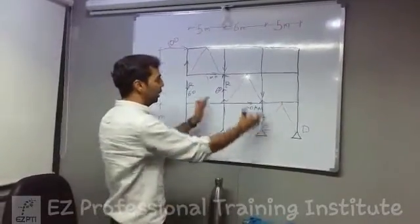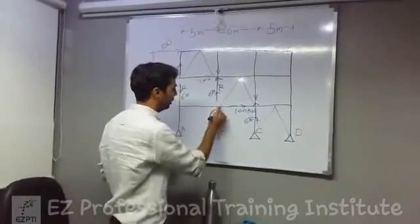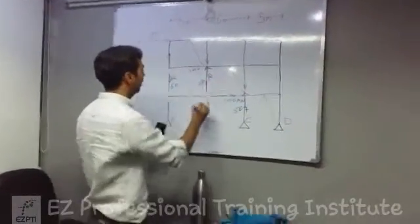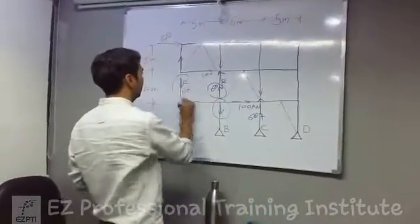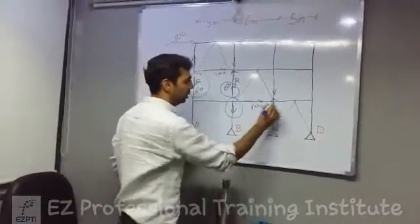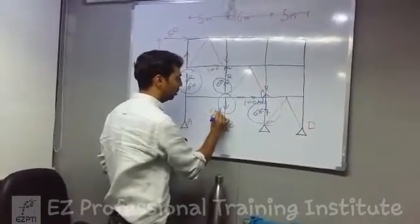Now this again will be the opposite couple. So the reaction of this will be like this - reaction here, reaction here, reaction here, and here reaction. So again the value will be 66.7.